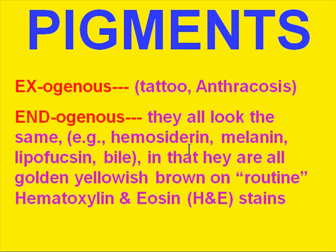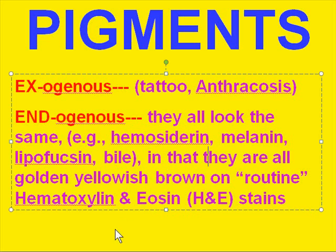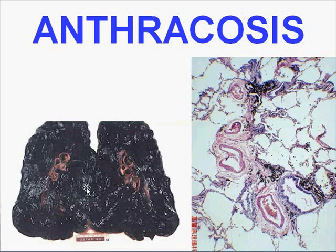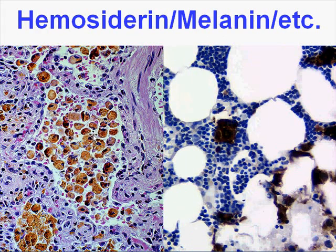Stains can help identify exactly what a pigment is. Here is a pigment picked up by macrophages in the dermis — it's very densely black. This is tattoo pigment, which can result in very dark-appearing skin. Here is anthracotic pigment taken up by the lungs; because lymphatics are richest sub-pleurally, you can see it picked up in the sub-pleural lymphatics, always looking blackest on the outside. Here is a golden brown pigment — if it's in an area with hemorrhage, it is most likely hemosiderin. A Prussian blue stain will turn this substance extremely blue to confirm it's hemosiderin. Melanin, lipofuscin, and bile can also look this way.